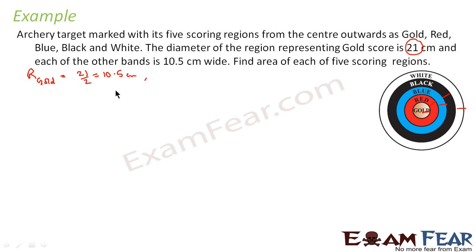Similarly, we will find the radius of the next, which is red. This will be 10.5 plus this extra 10.5. This will be 10.5 plus 10.5, that is 21 cm. So we have radius of red also.